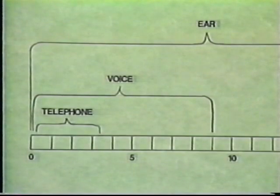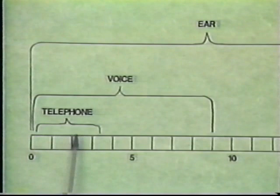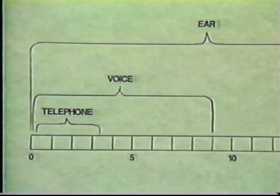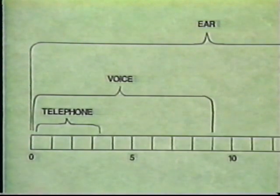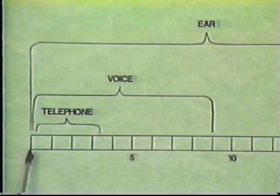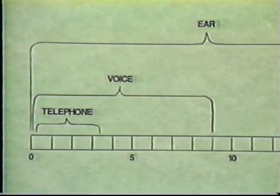Studies have shown that if the range of frequencies from about 300 hertz up to 3,700 hertz are passed through the telephone, it generates enough range of frequencies to allow the listener to know who they're talking to. It's also been proven that this range of frequencies is the most commonly used by the human voice and where most of the power in the human voice exists.